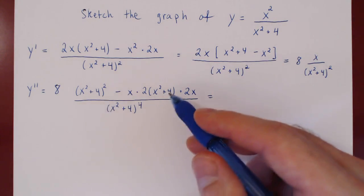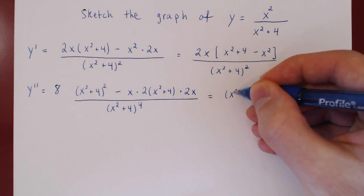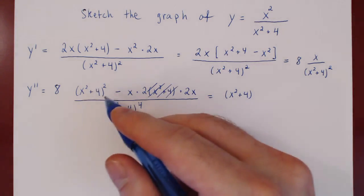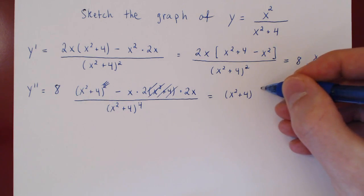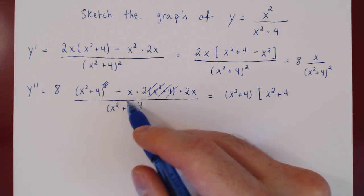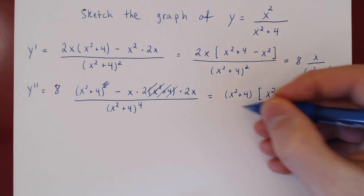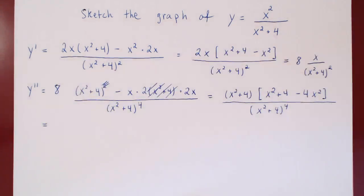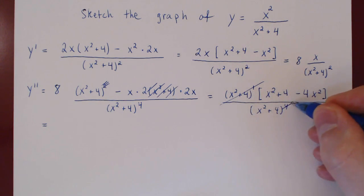Let's simplify and factor common terms. We have an x squared plus 4 here and two of them here, so we can factor one out. If we factor it out, we're left with one x squared plus 4 from the first term. There are no other common factors, so we combine: x squared plus 4, minus x times 2x, which is minus 4x squared, all over the fourth power of x squared plus 4. This is a power of 1, and 4 minus 1 is 3, so this cancels to give a power of 3.